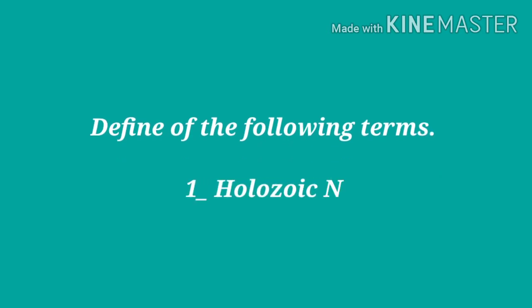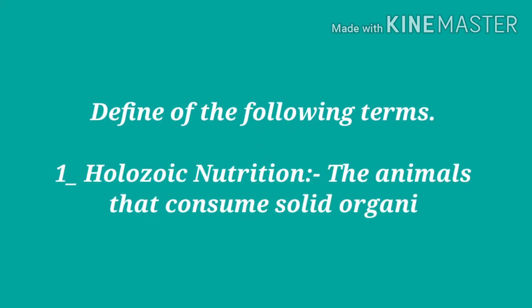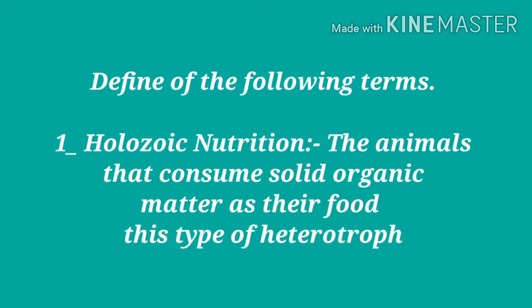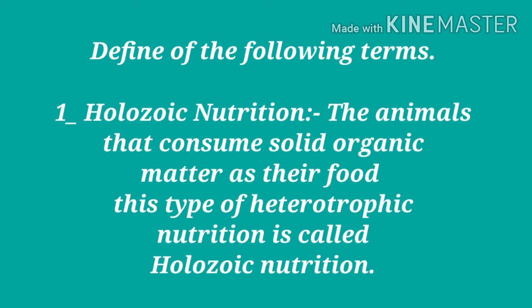Define the following terms. The first define is holozoic nutrition. The animals that consume solid organic matter as their food, this type of heterotrophic nutrition is called holozoic nutrition. Dekhye, वो जानवर जो अपने खाने में ठोस कार्बनिक पदार्थ लेते हैं, तो इस तरह के heterotrophic nutrition को ही holozoic nutrition कहा जाता है.